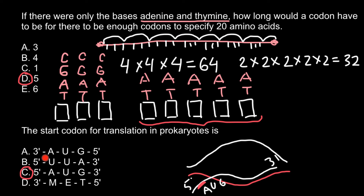So we have the 5' end, the 3' end, and AUG goes in this direction. Messenger RNA grows from 5' end to 3' end. There is another AUG shown as answer A, but it is in the wrong orientation — because messenger RNA doesn't grow from 3' end to 5' end, but from 5' end to 3' end. The 5' and 3' ends are marked on both DNA strands, and these two DNA strands open in this direction to allow messenger RNA to grow and elongate in this direction.